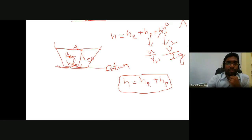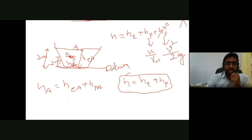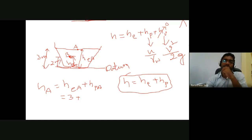Returning to the bucket example with points A and B: to calculate total head at point A, we add elevation head at A plus pressure head at A. If point A is at a height of 3 meters from the datum, the elevation head is 3 meters. Since point A is at the water surface and is exposed to atmosphere, the pressure head corresponding to point A is equal to zero (atmospheric pressure head = 0).